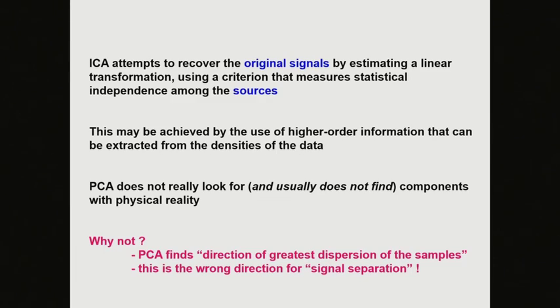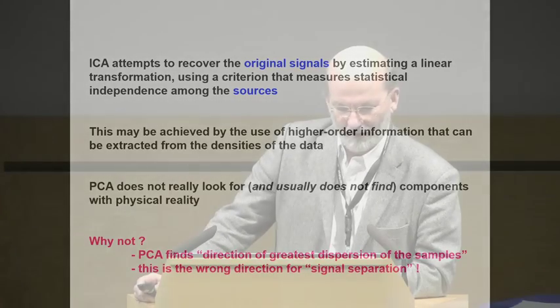ICA tries to extract the source signals by calculating higher-order statistics such as kurtosis, based on the histogram. PCA doesn't look for that and doesn't find it. People spend their lives looking at their loadings and interpreting them — this is not a good idea, because your loadings are mixtures. PCA looks for directions of dispersion of individuals, not for the source signals.